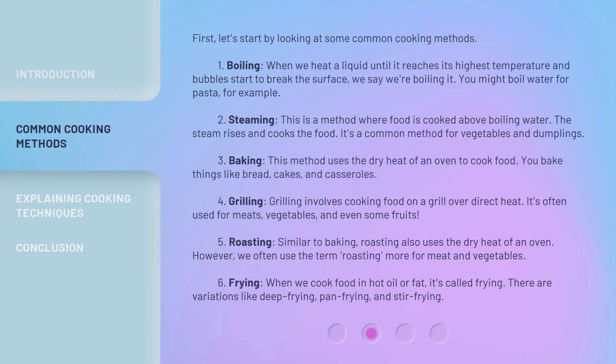First, let's start by looking at some common cooking methods. 1. Boiling. When we heat a liquid until it reaches its highest temperature and bubbles start to break the surface, we say we're boiling it. You might boil water for pasta, for example. 2. Steaming. This is a method where food is cooked above boiling water. The steam rises and cooks the food. It's a common method for vegetables and dumplings.